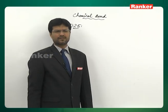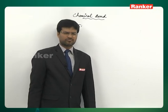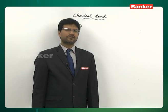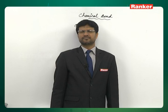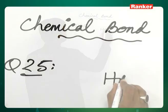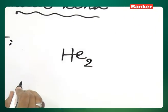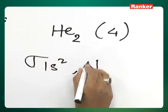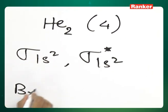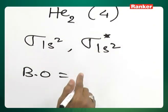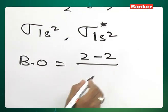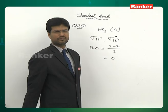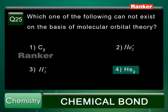Question number 25: Which one of the following cannot exist on the basis of molecular orbital theory? Options: C2, He2+, H2+, He2. Any species with bond order 0 is not expected to exist. For He2, it has 4 electrons: sigma 1s2, sigma* 1s2. Bond order = (2 - 2) / 2 = 0. Because bond order is 0, He2 is not expected to exist. Answer is the fourth option.